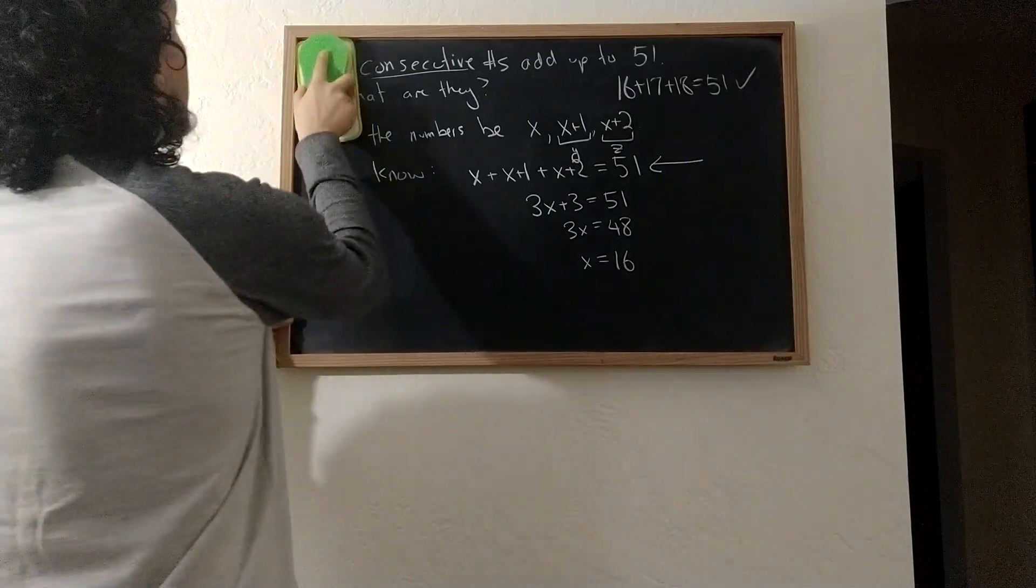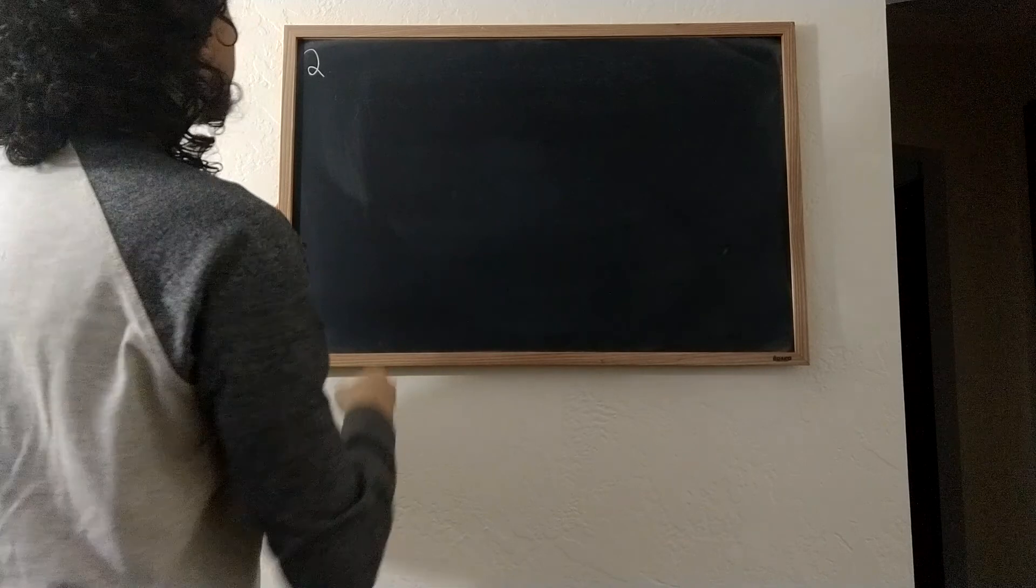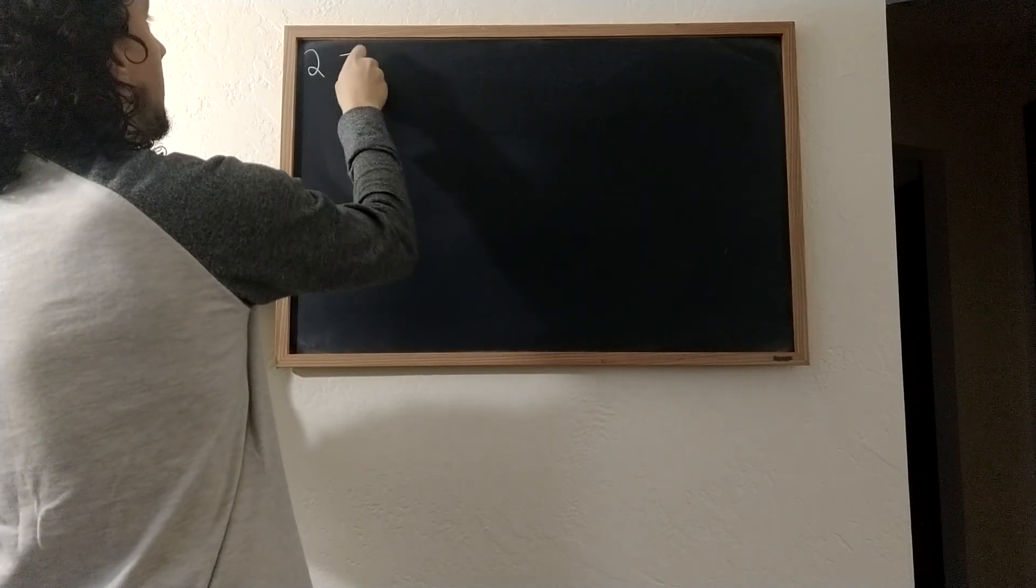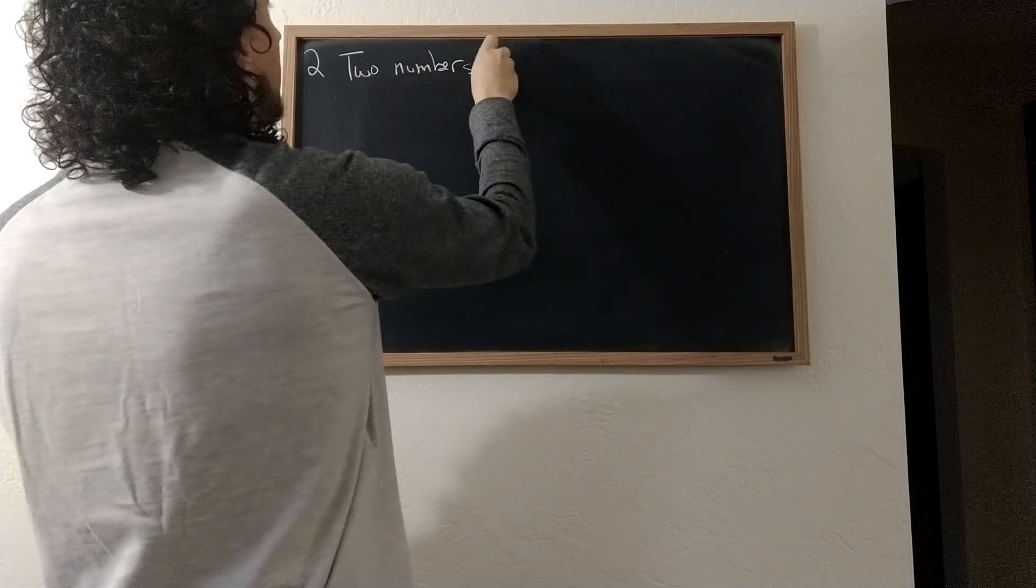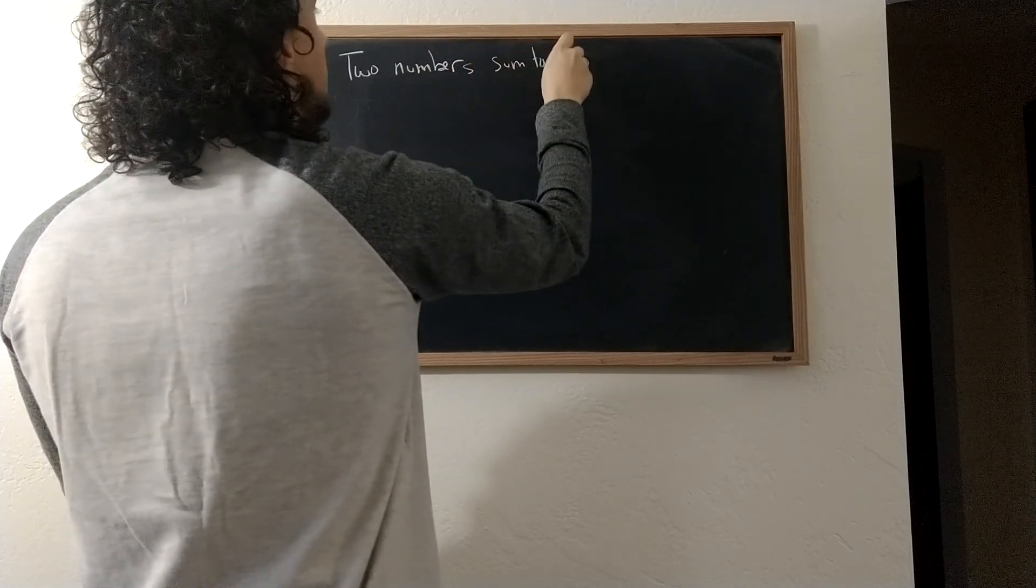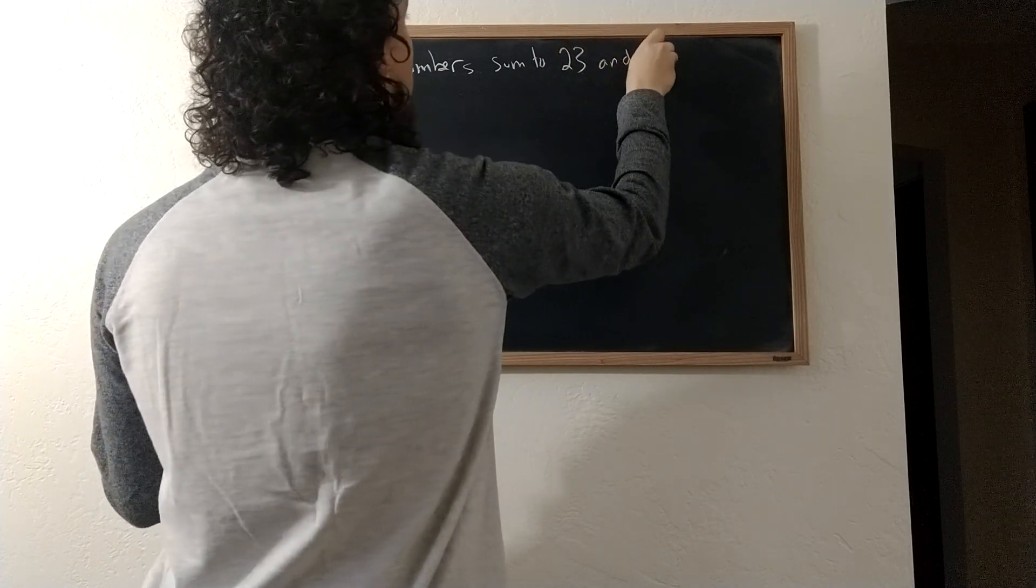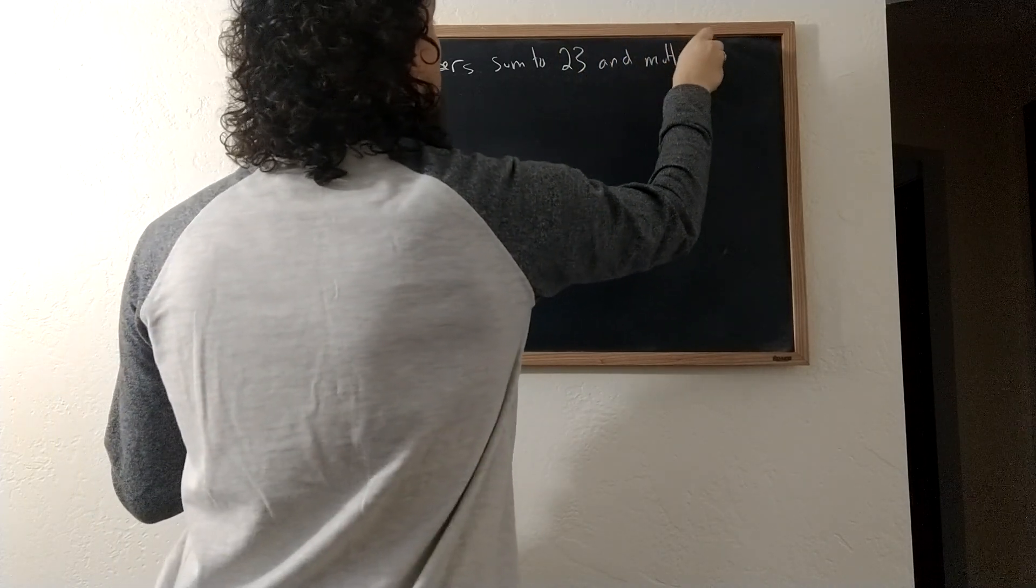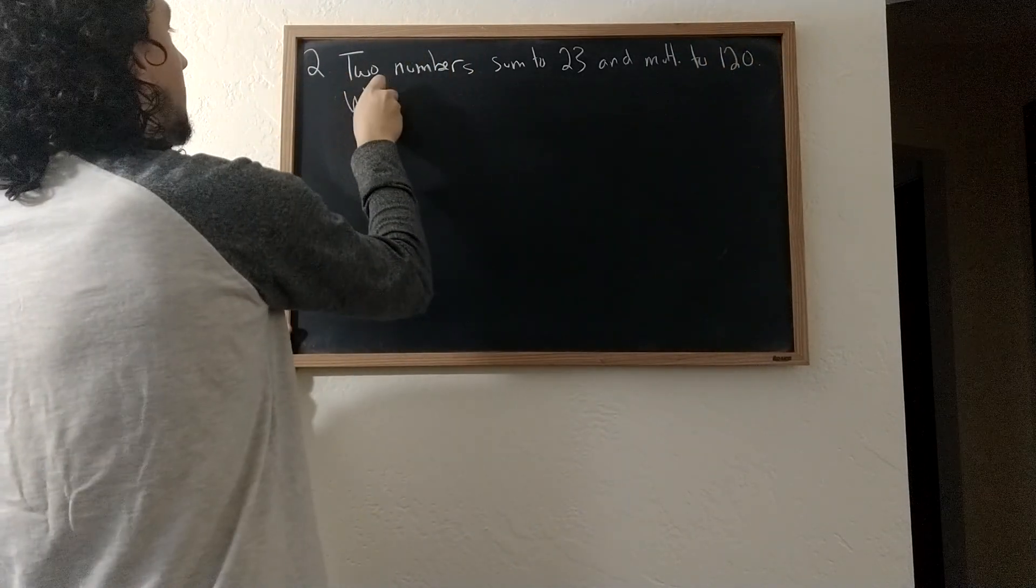Now let me give another example. Just have a small blackboard here. So another example would be, we're in the same theme: two numbers sum to 23 and multiply to 120. What are they?